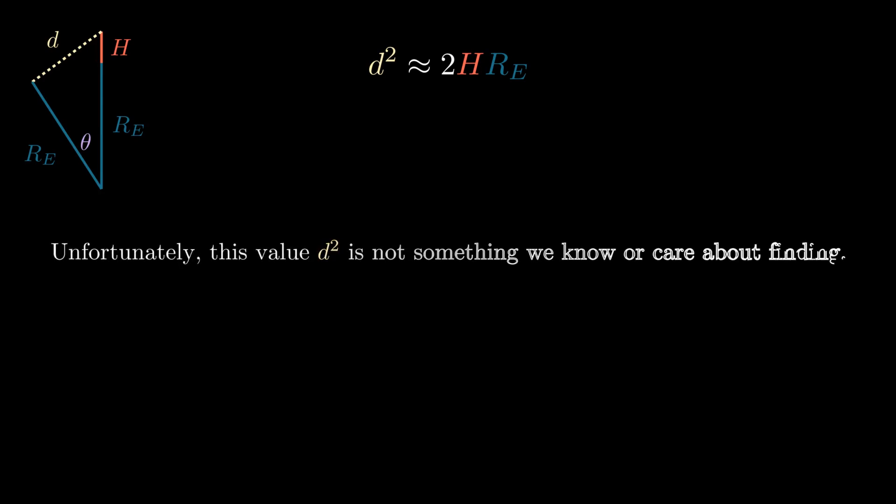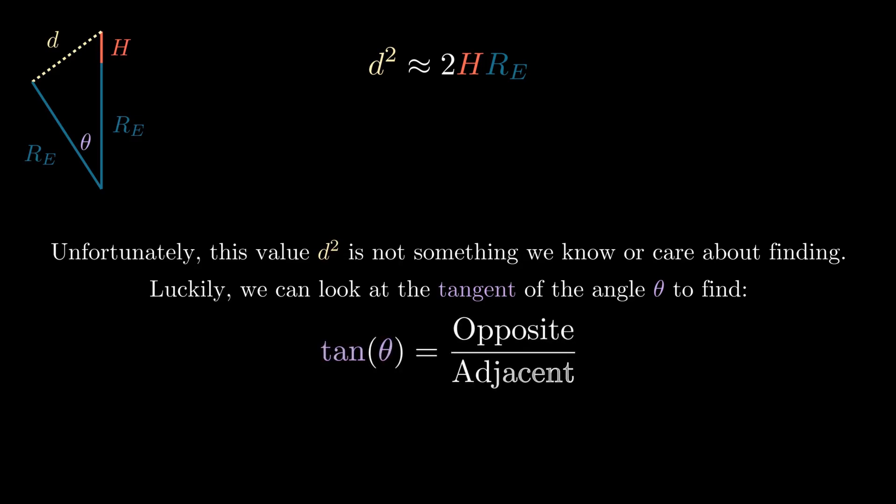Unfortunately, this value d squared isn't something we know or care about finding. Luckily, we can look at the definition of the tangent of the angle theta to find another equation to use. The tangent of an angle is defined as the opposite length divided by the adjacent length. From our triangle diagram, this corresponds to the tangent of theta is equal to d divided by RE.